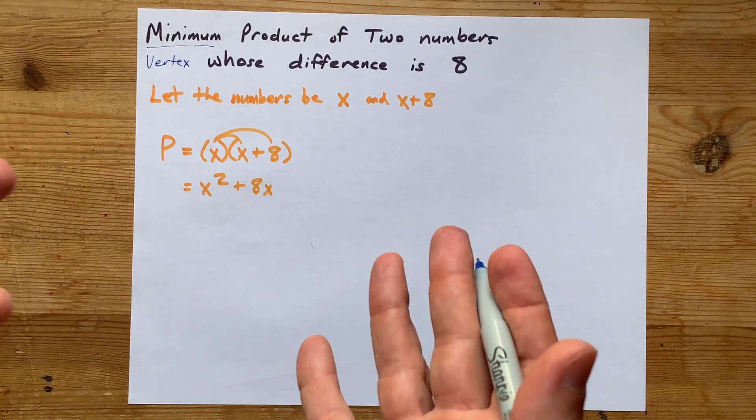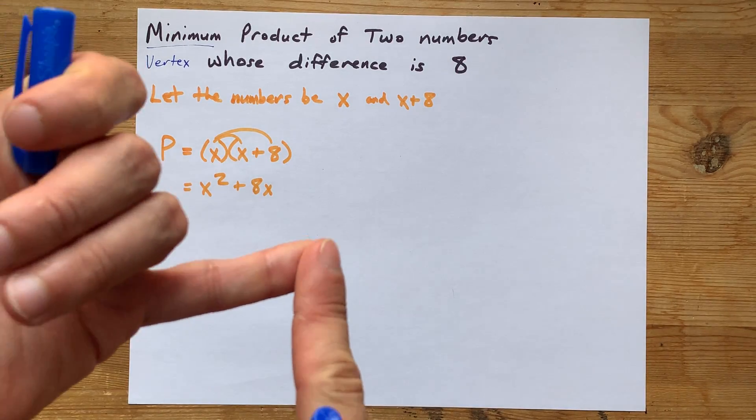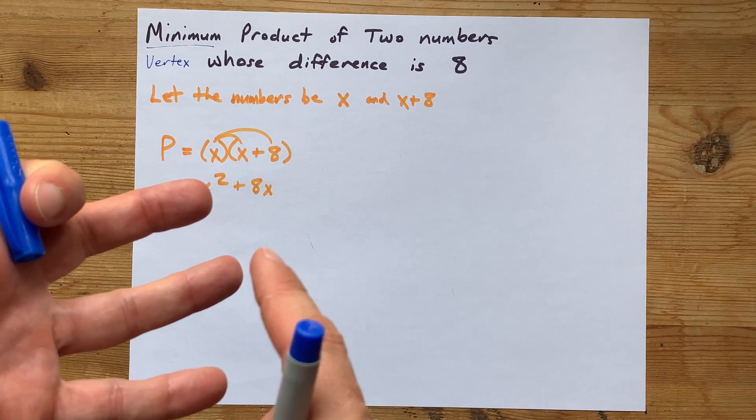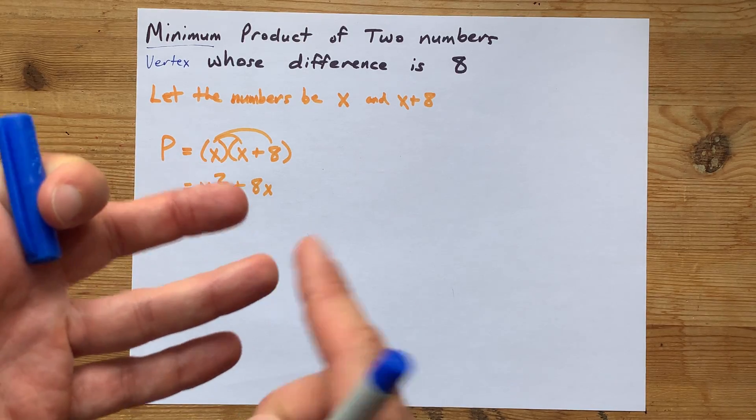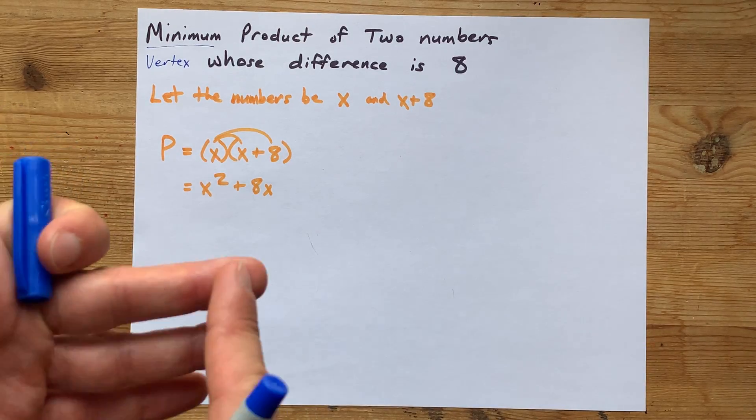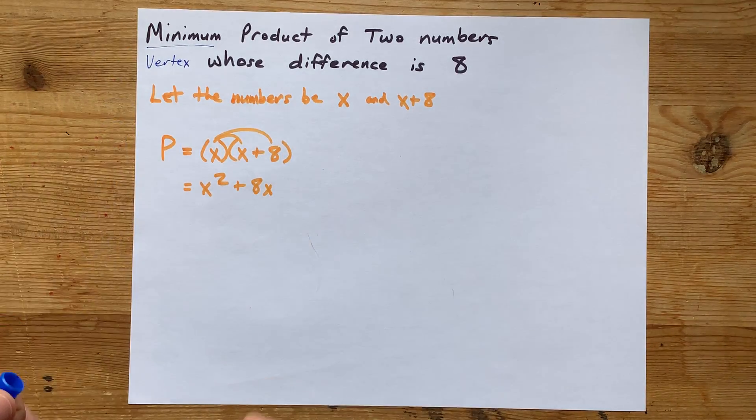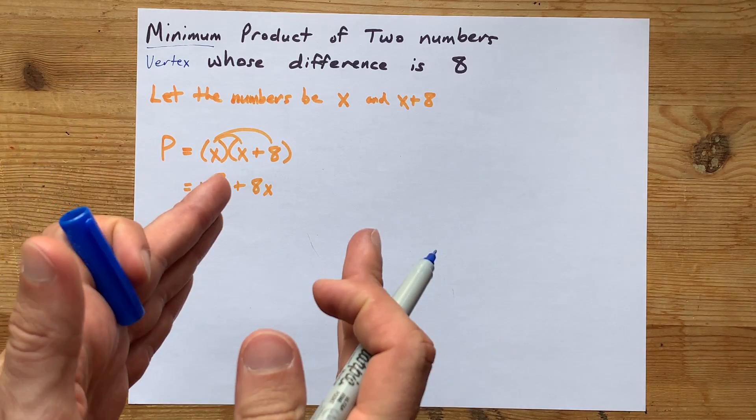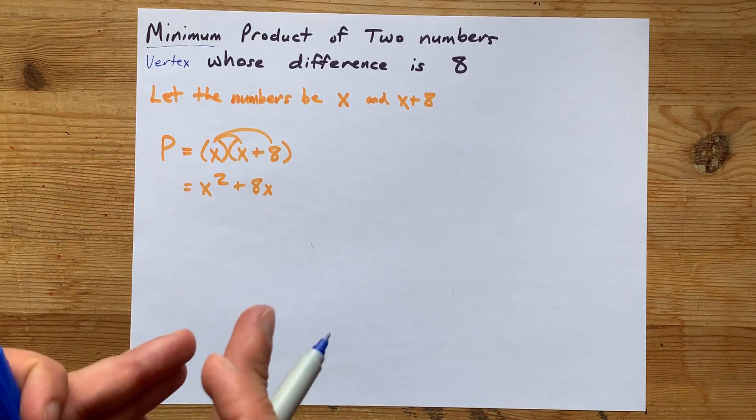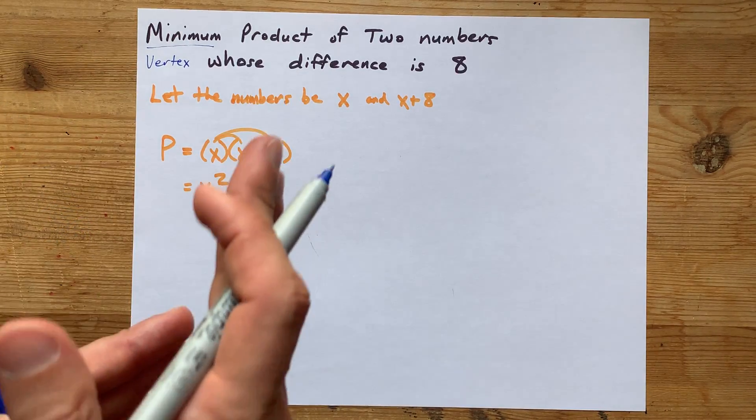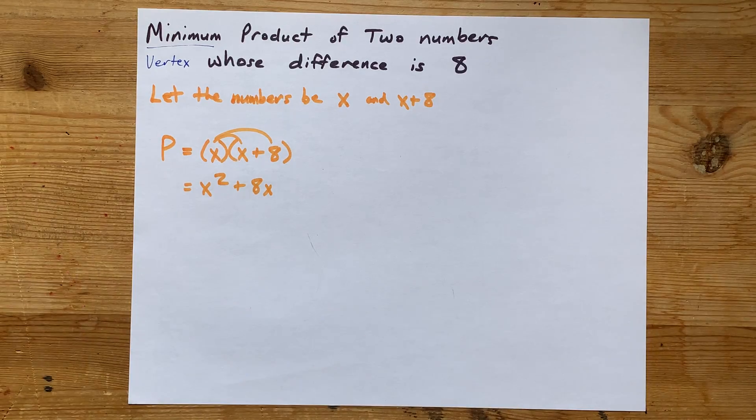There's like five different ways you can do it. You can complete the square, if you know what that is. There's a formula for negative b over 2a, if you've been taught that. The way that I'm going to do it, and the way I find most kids like doing it, is factoring. Factoring gives you the x-intercepts, and the vertex is right in between the two, directly in between the two.